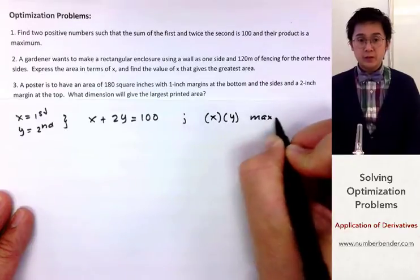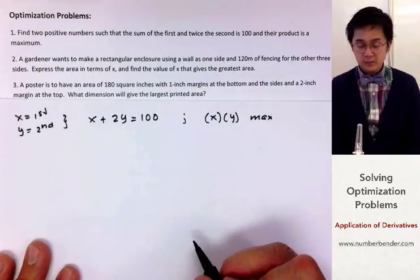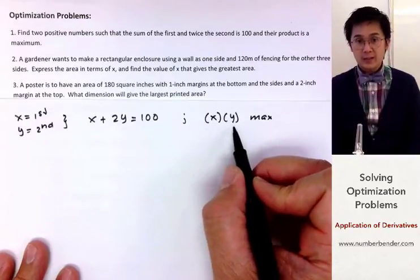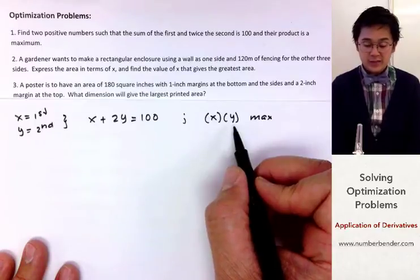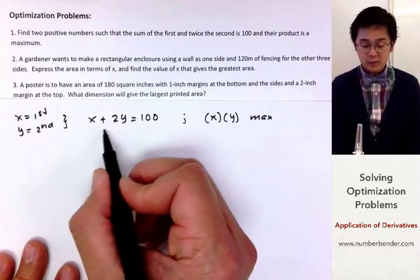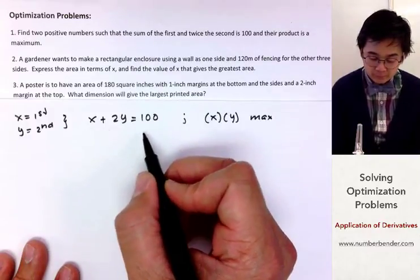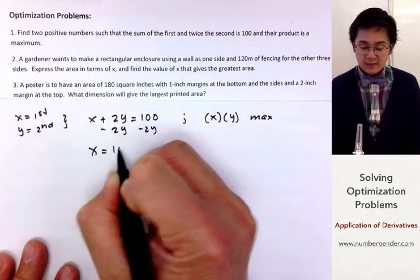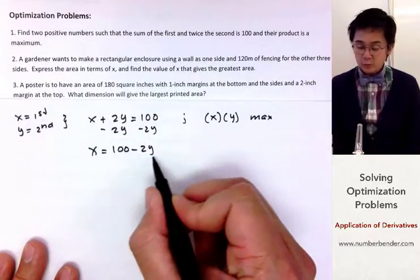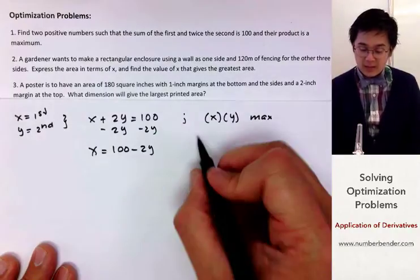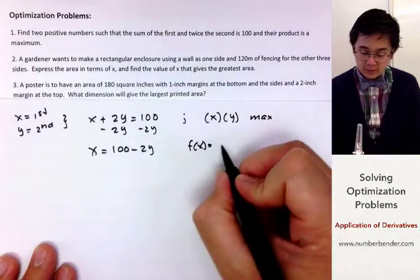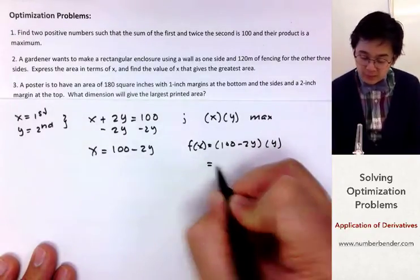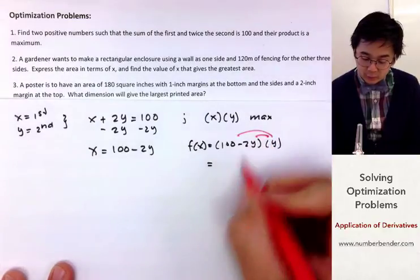To apply the derivative, we work with the second equation — the one we're going to maximize. Since it has two variables, we need to reduce it to a single variable using the first equation. From x plus 2y equals 100, we get x equals 100 minus 2y. Substituting, our modified function becomes f(y) = (100 minus 2y) times y, which by the distributive property gives 100y minus 2y squared.